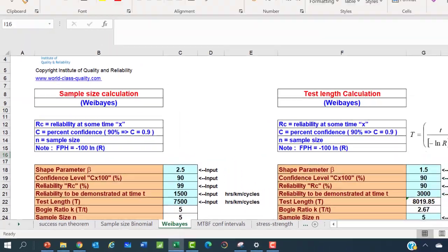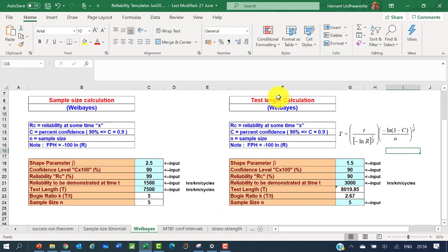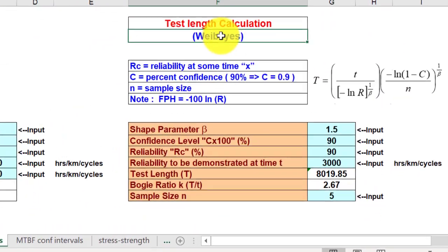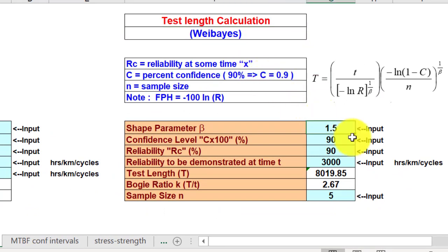You could also use the other part of the template which shows the test length calculation. You can enter the values of shape parameter beta as 3.5, confidence level C as 80%, reliability RC that is minimum reliability 99%, time T as 200, and the sample size as 20 to see the test length as 362.